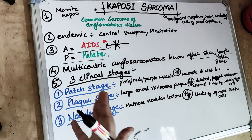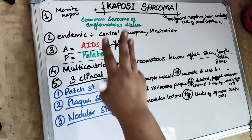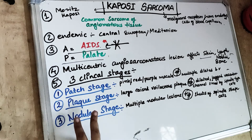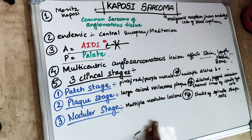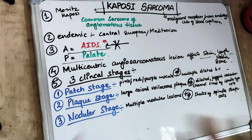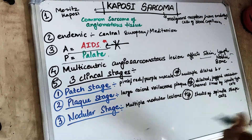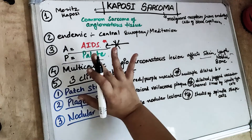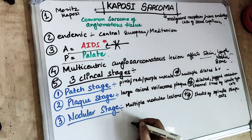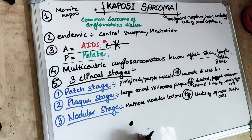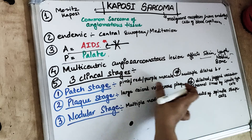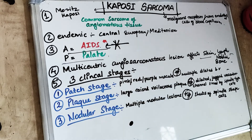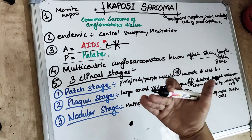There are three clinical stages of Kaposi Sarcoma. The first one is the patch stage, which is the initial stage. Anything initiates from low and goes larger at the final stages. In the patch stage, there is just a patch — no big lesion. It is either a pink, red, or purple color macule. It is just a patch with no elevated surface.